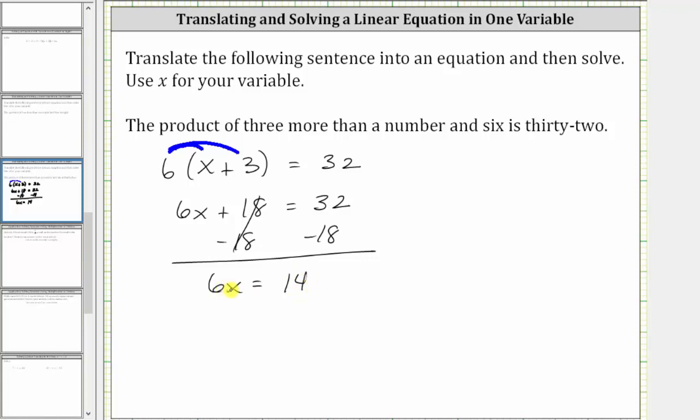For the last step, six x means six times x. To undo the multiplication and solve for x, we divide both sides by six. Simplifying, six divided by six is one. One times x is x. We have x equals 14 sixths, but this does simplify because 14 and six share a common factor of two.